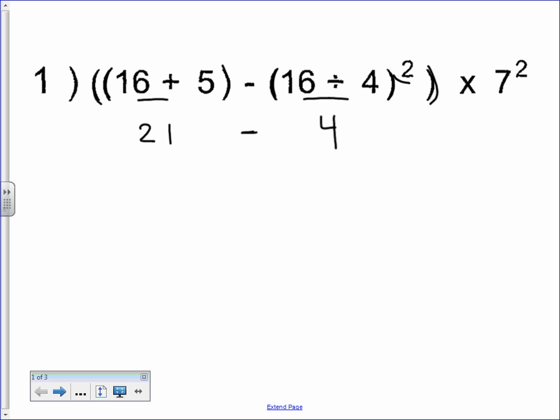The exponent up here goes with the 4 because you have to do this parentheses first and then the exponent. Parentheses always comes before exponents. This is still in parentheses, so we haven't done anything with this yet.